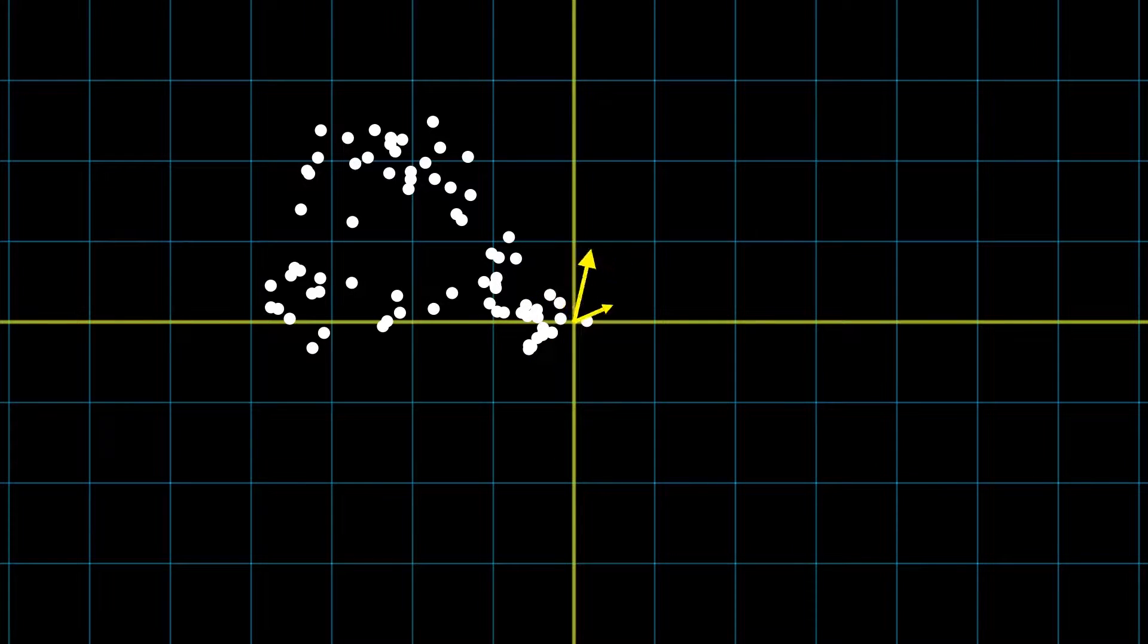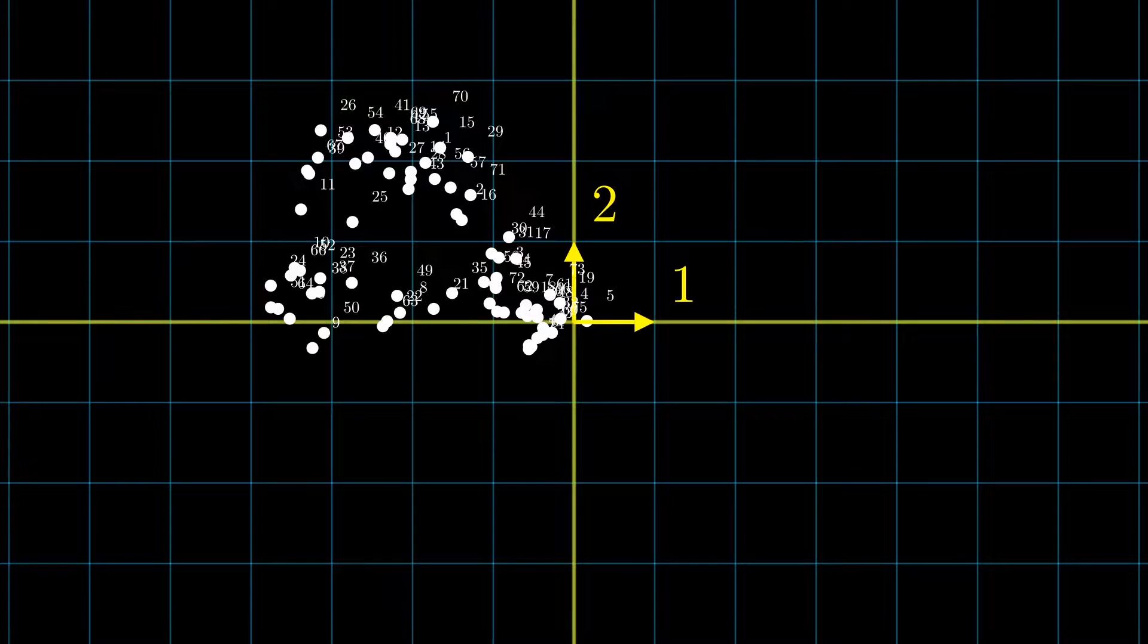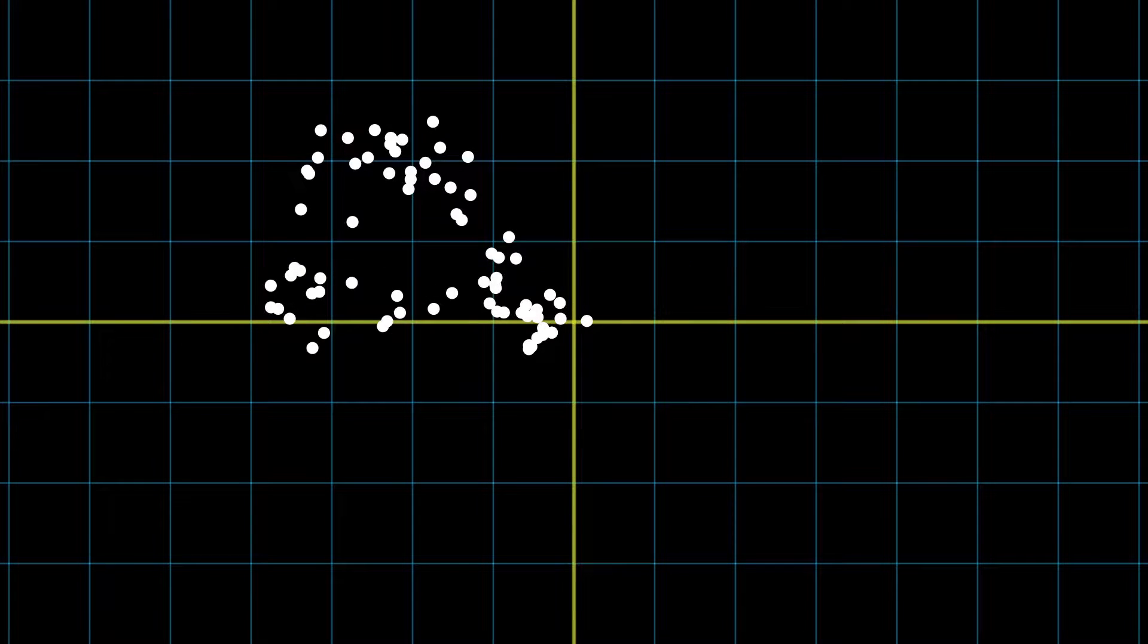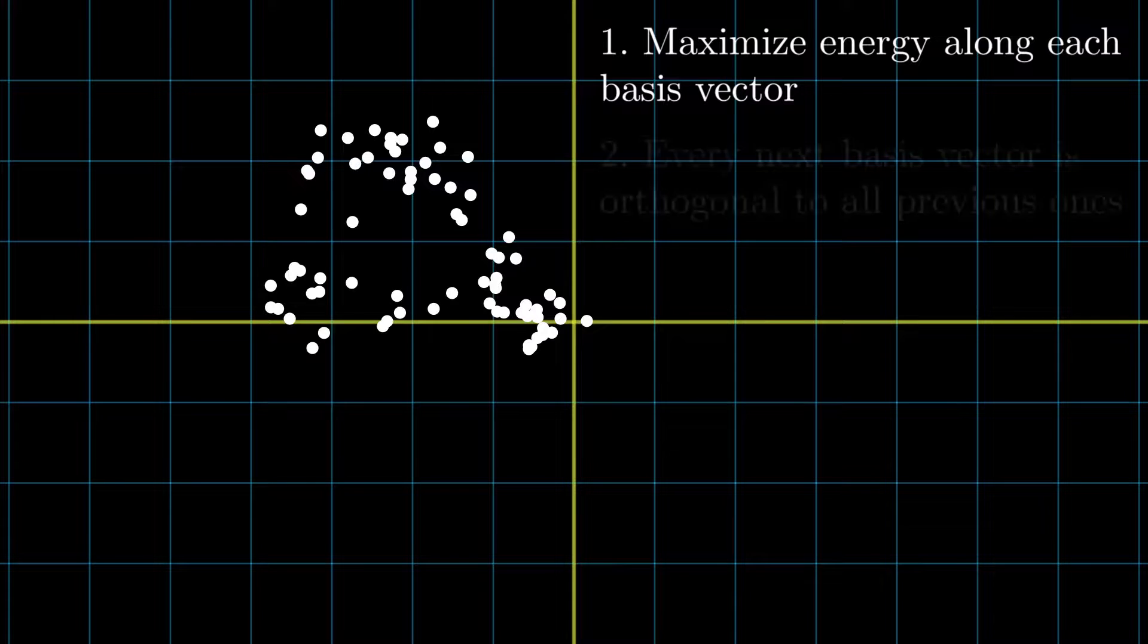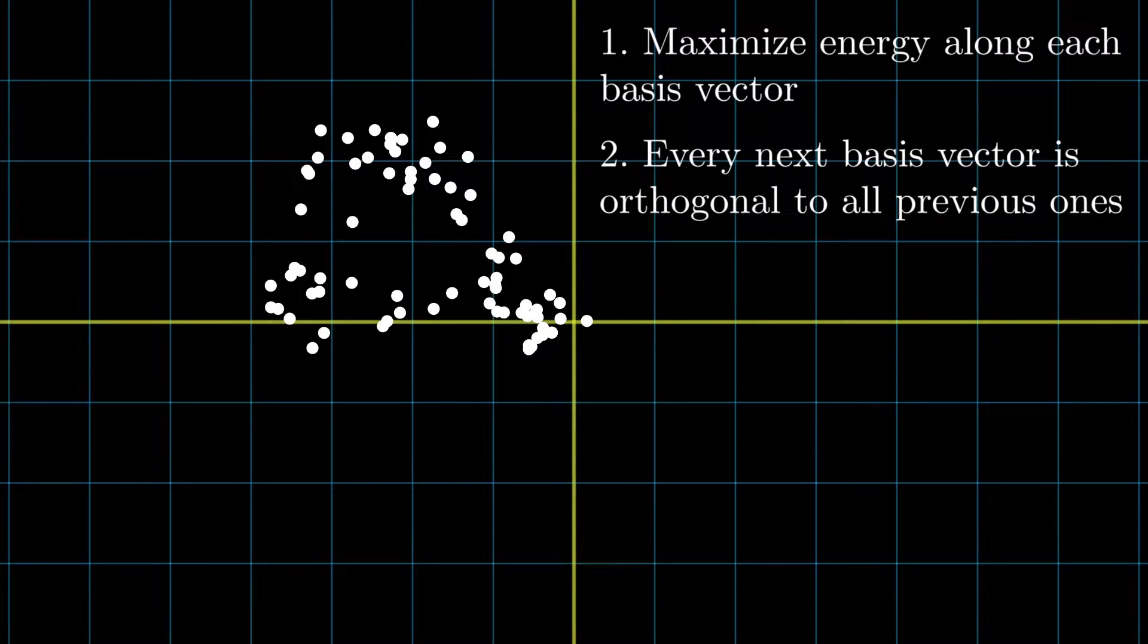This is the principle that guides the proper orthogonal decomposition algorithm. We want to find a set of basis vectors such that we can better represent the data that we're handling here. So let's first note that in this case we have more data points than dimensions. So this problem has really no exact solution and what we're trying to look for here is a way to optimize the representation based on some criteria. So the POD algorithm is defined such that it maximizes the energy along each one of its basis vectors sequentially such that each subsequent basis vector is perpendicular to all of the previous basis vectors.